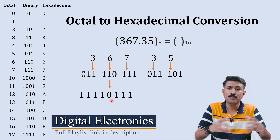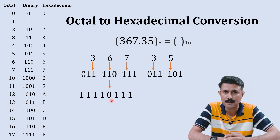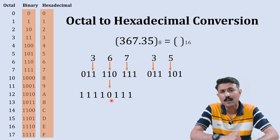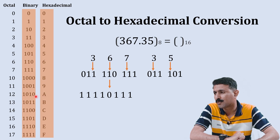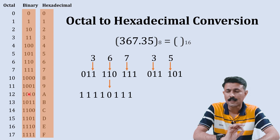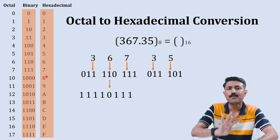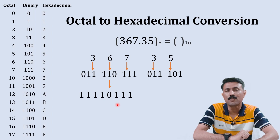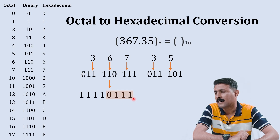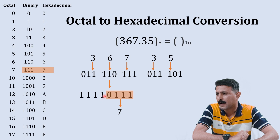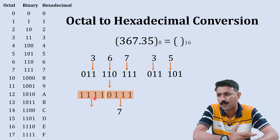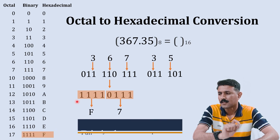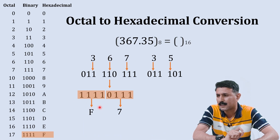Now we need to group the binary digits into clusters of four to form the hexadecimal number. We use groups of four because to represent any individual hexadecimal digit, you need a maximum of four binary bits. Starting from the least significant bit, the first group of four is zero one one one, which is equivalent to seven. The next group is one one one one, which is equivalent to F.